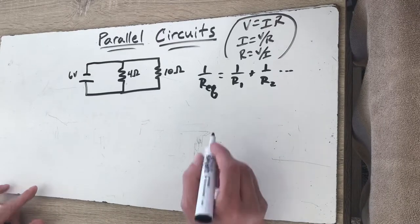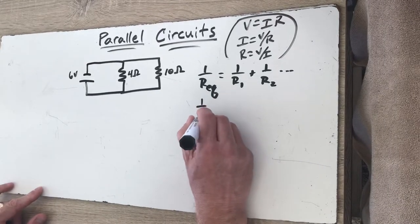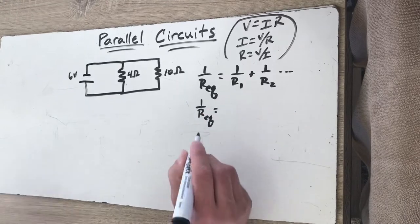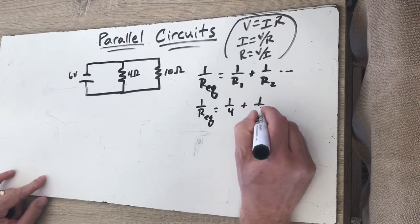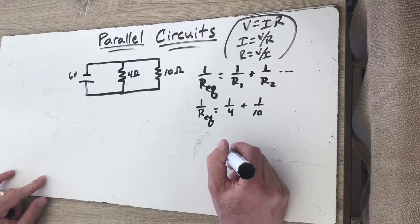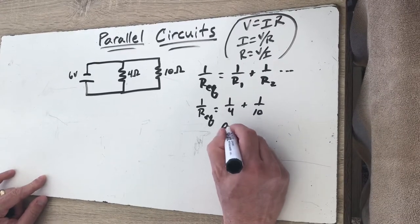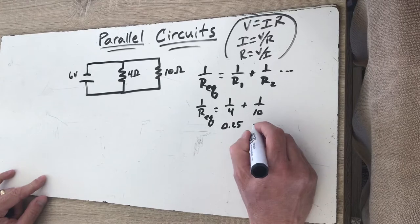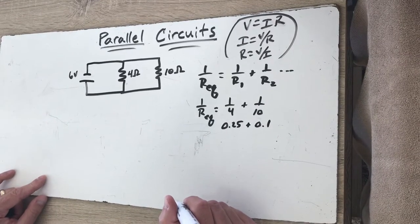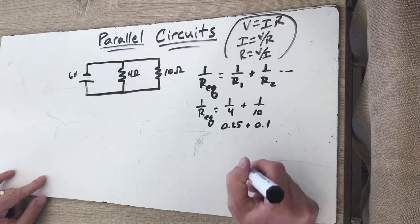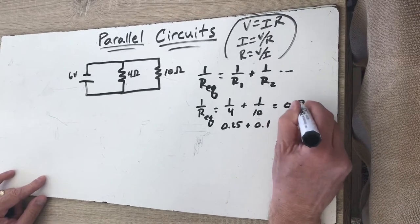The overall resistance for this one we would say 1 over the equivalent resistance is going to be 1 over 4 plus 1 over 10. Now I can change this to 0.25, I can change this to 0.1 just by taking the numerator divided by the denominator. That gives me 0.35.